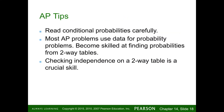Here are some AP exam tips: read conditional probabilities carefully. Most AP problems use data for probability problems — become skilled at finding probabilities in two-way tables. We're going to do a lot of two-way tables, contingency tables, and conditional probabilities for the rest of the school year. Checking independence on a two-way table is a critical skill because you can quickly determine probabilities from a table without a lot of extra work.